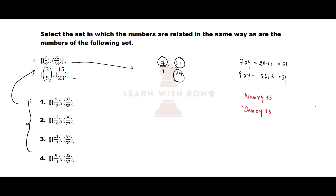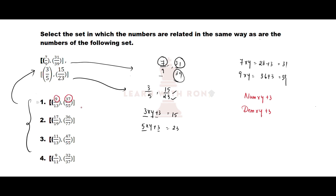Let us verify this pattern for the second set: 3/5 and 15/23. 3 times 4 plus 3 equals 15, which is the numerator. 5 times 4 plus 3 equals 23, which is the denominator of the second fraction. Now verifying the options — for numerators 9 and 36: 9 times 4 plus 3 is 39, but they have given 37, which does not match.